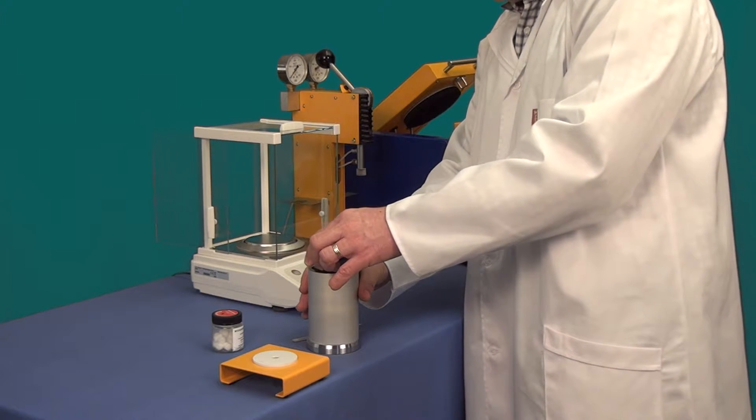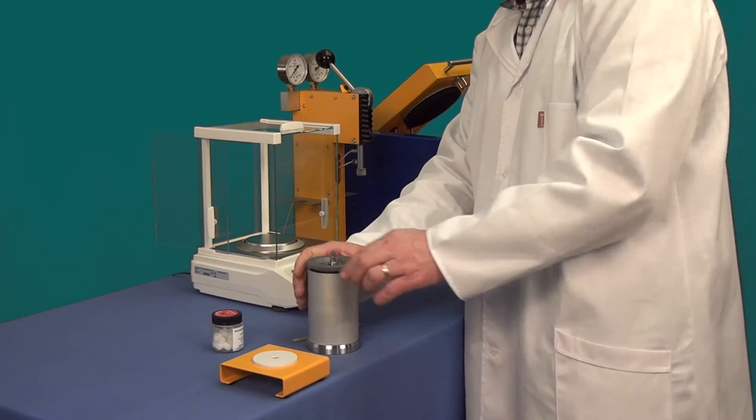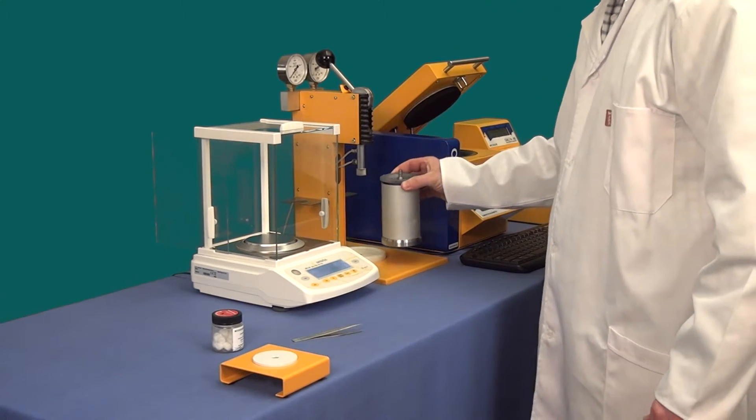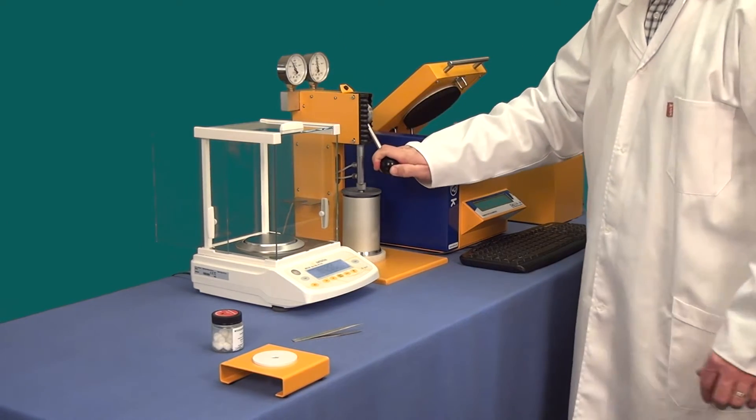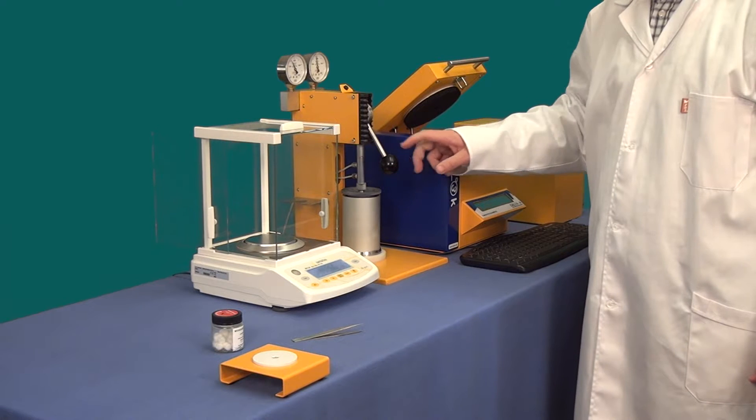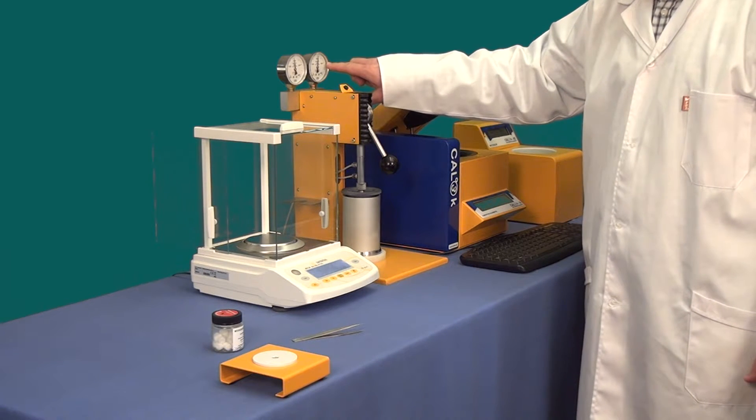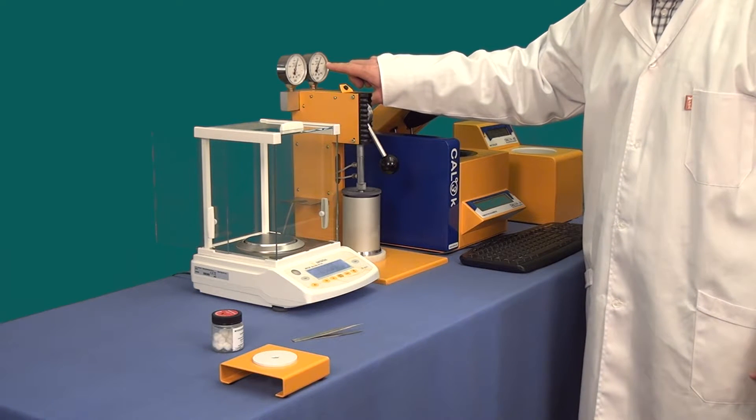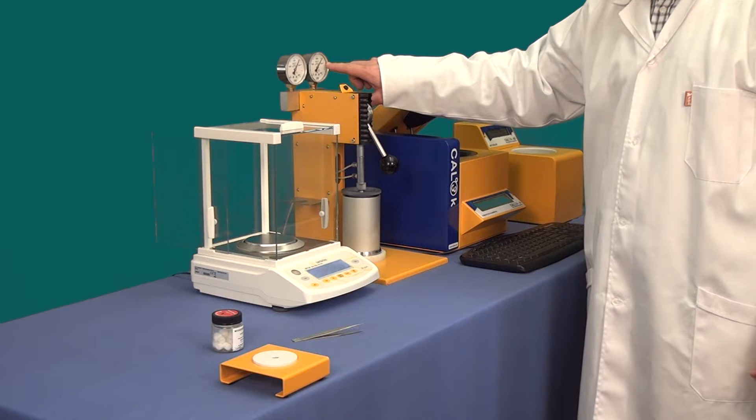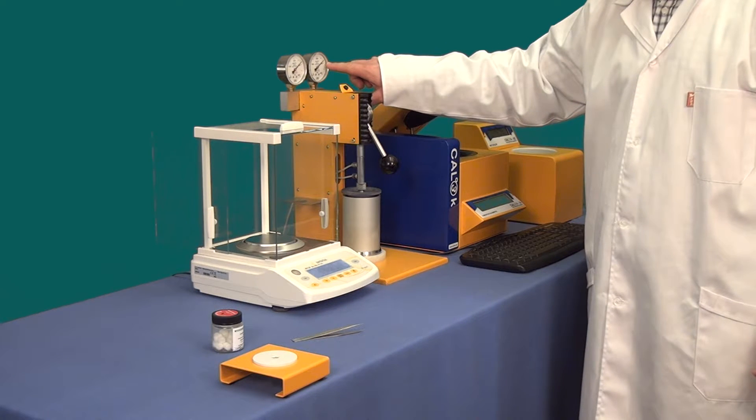Place the lid assembly nice and easily into the bomb vessel and close the lid firmly. Place the bomb vessel into the filling station and fill the vessel with oxygen. It will take approximately 15 to 20 seconds for the bomb to fill with oxygen. The target is 3000 kPa as indicated.